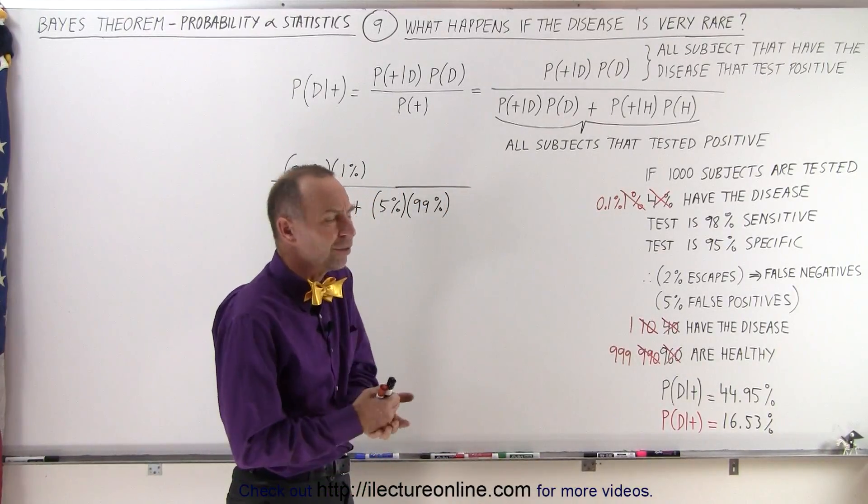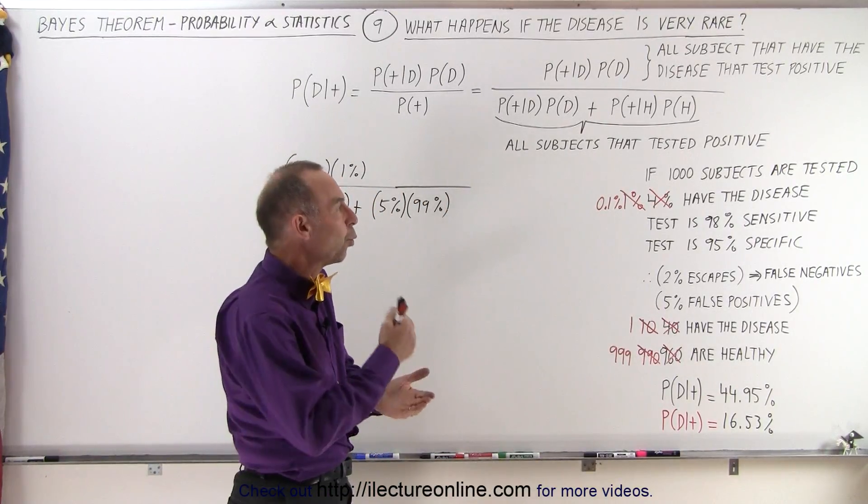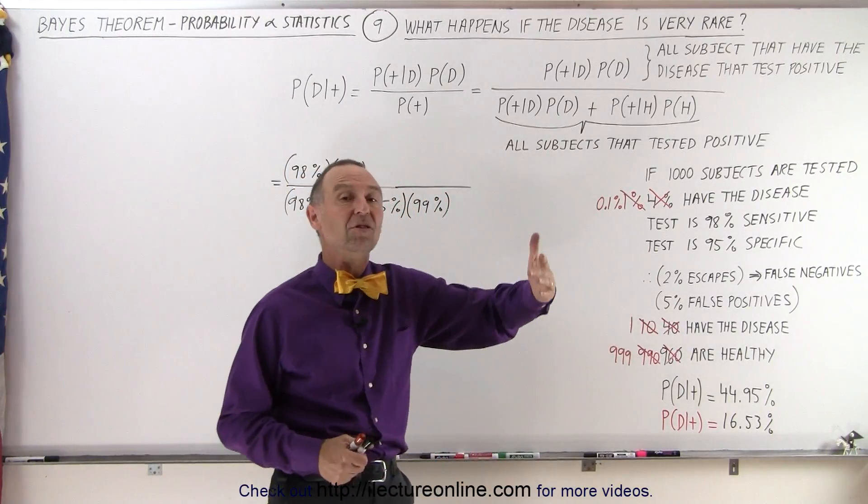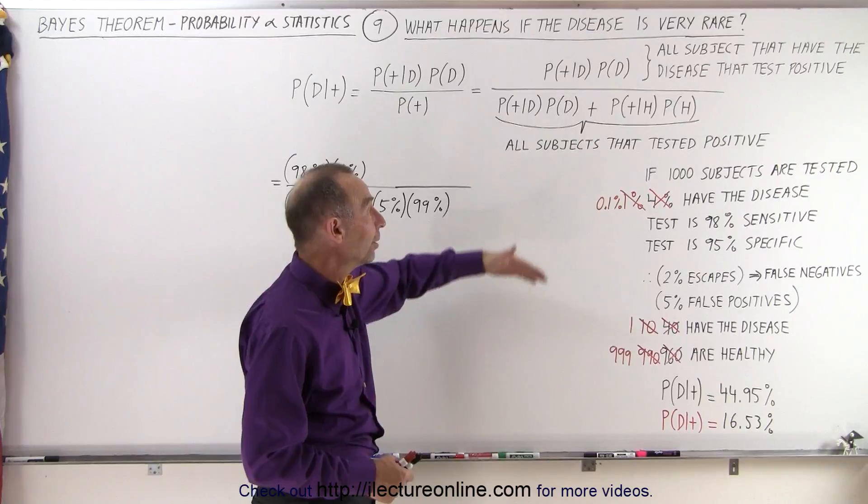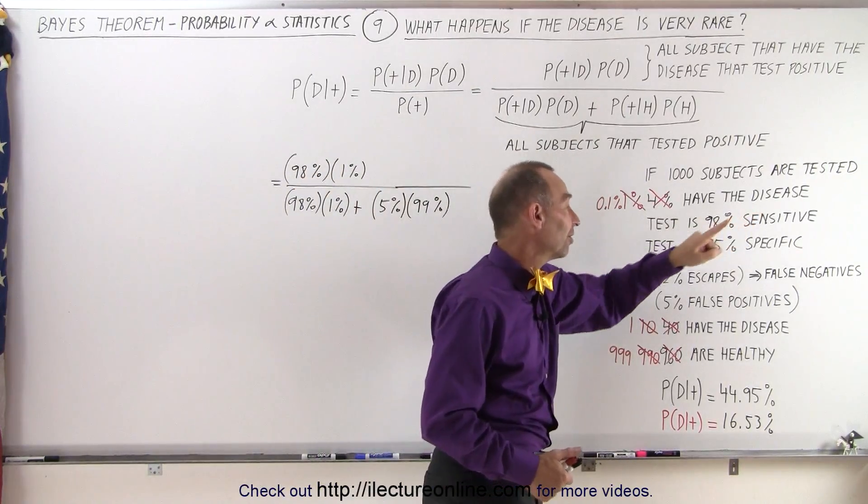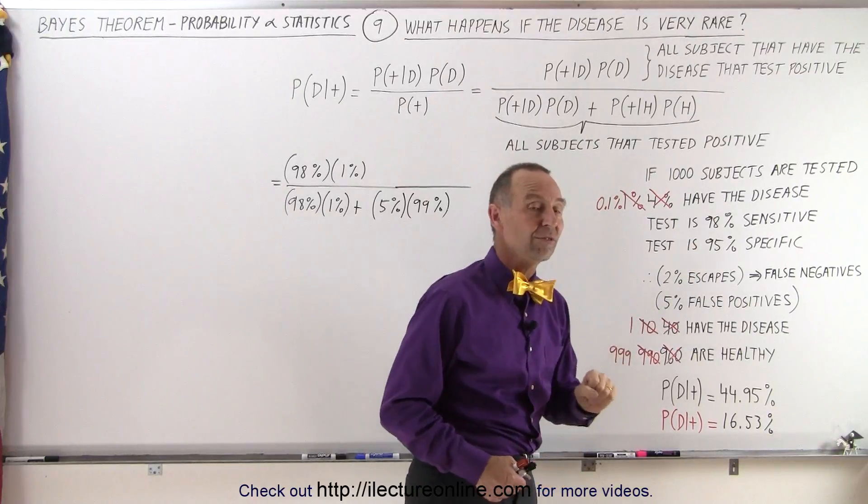So the question then would come up, what if it was even more rare and only one in a thousand, 0.1% of the population have the disease that you're testing for, and the parameters to test were the same? 98% sensitive, 95% specific.